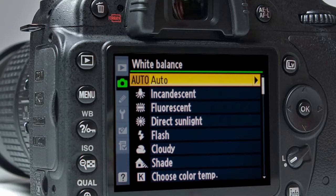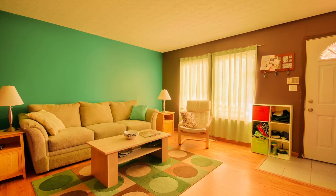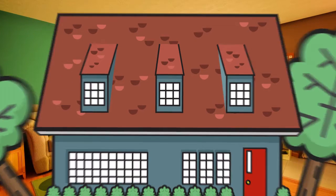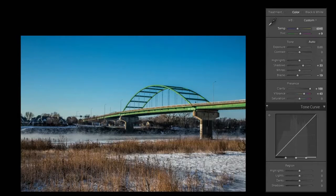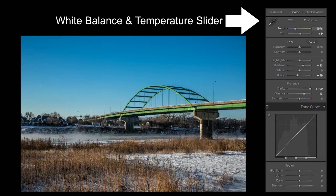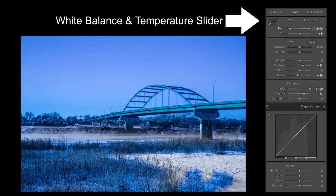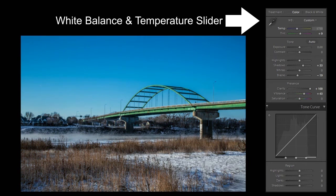But sometimes your camera's auto setting isn't going to work properly. You've probably taken a few photos that have turned out really blue or really yellow. When that happened, your camera had an incorrect white balance. Don't worry, it's easy to fix in our editing program. Just look for the white balance adjustment slider. You can change the color temperature of the photo by sliding it to the left to make your photo more blue, or sliding it to the right to make your photo more yellow.